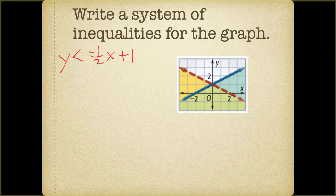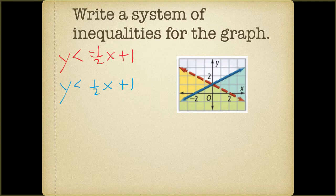For the blue line, we have a slope of up one over two, so the slope is one-half. The y-intercept is also one. We are shaded below the line, where that light blue region is. Since it is a solid line, we use less-than-or-equal-to. That gives us the complete system of inequalities for this graph.